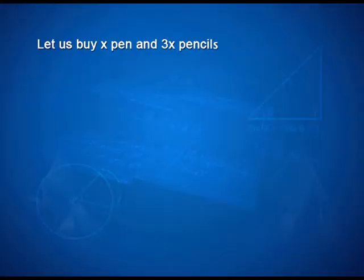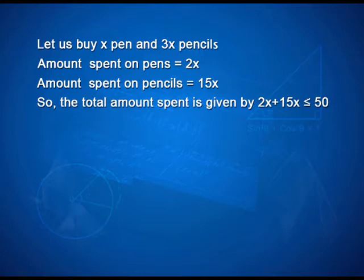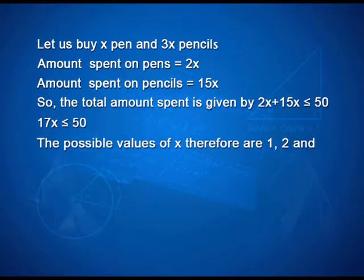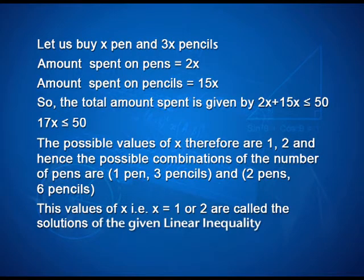Let us consider a real life problem. If you go to the market with rupees 50 to buy some pens and pencils worth rupees 5 and 2 respectively, under the condition that you are buying 3 times the number of pencils as pens — let us say x pens and 3x pencils. The amount spent on pens would be 2x rupees and on pencils 15x rupees. So the total amount spent is 2x + 15x, which should be less than or equal to 50. Therefore, 17x ≤ 50, and the possible values of x are 1 and 2, giving combinations of 1 pen and 3 pencils or 2 pens and 6 pencils. These values are called solutions of the given linear inequality.